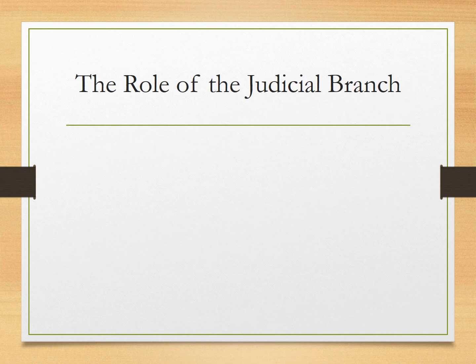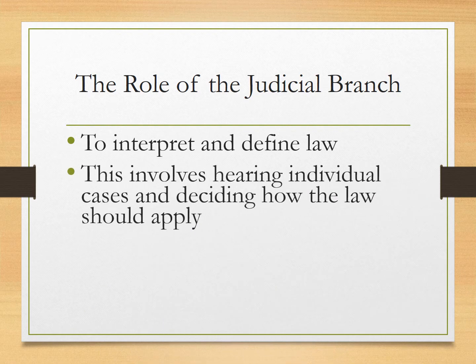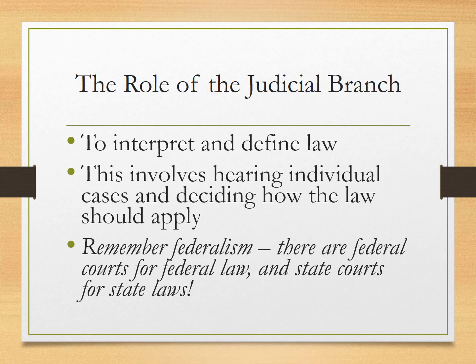So what does the judicial branch do? They interpret and define law. This involves hearing individual cases and deciding how the law should apply. And we have to remember the concept of federalism — that means power is split between a central government, the federal government, and then state governments as well as local governments. So we have federal courts for federal law and state courts for state laws.